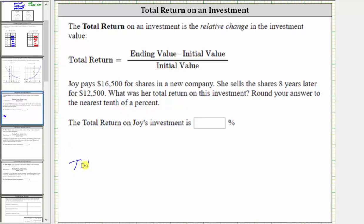So the total return is equal to, in the numerator we have the ending value minus the initial value. The ending value is the amount she got selling the shares eight years later, which was $12,500. And then minus the initial value was the purchase price of $16,500. And this is divided by the initial value, which again is $16,500.